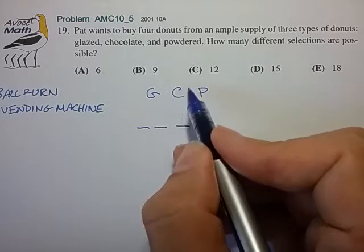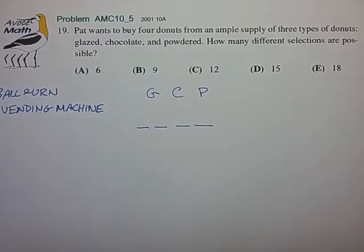or 0 to 4 powdered. And we just require that the sum of the doughnuts equals 4.